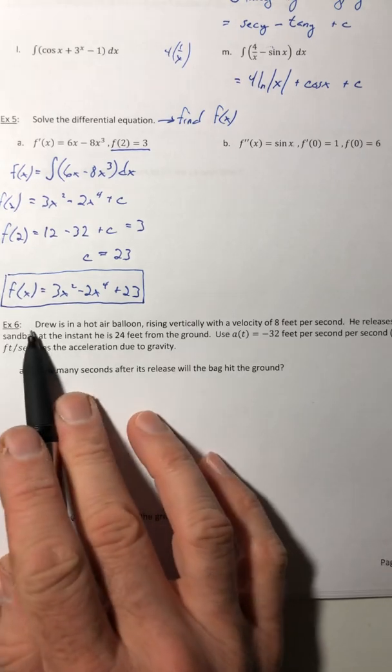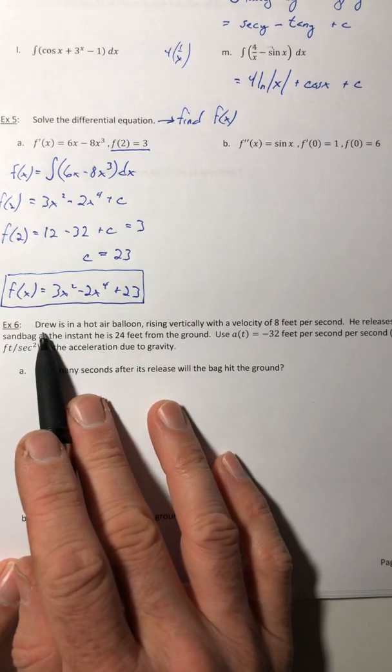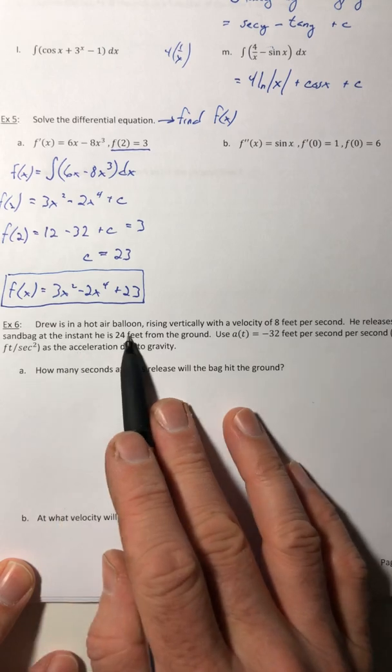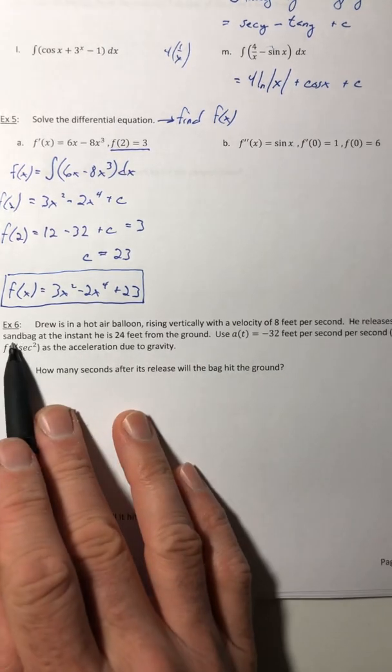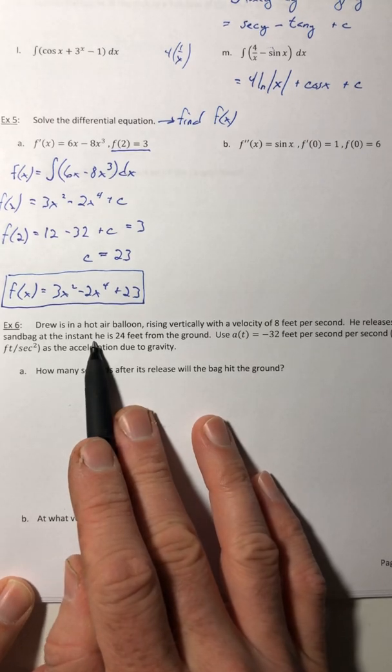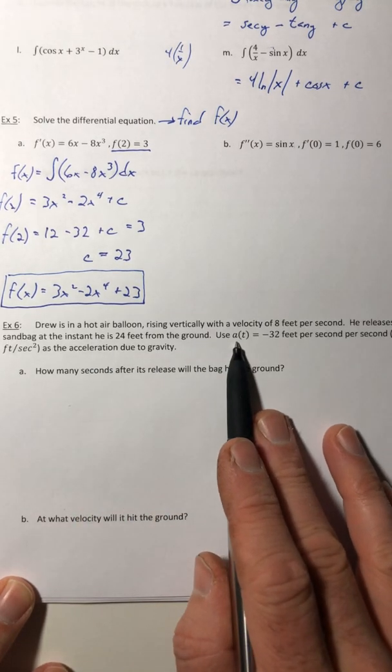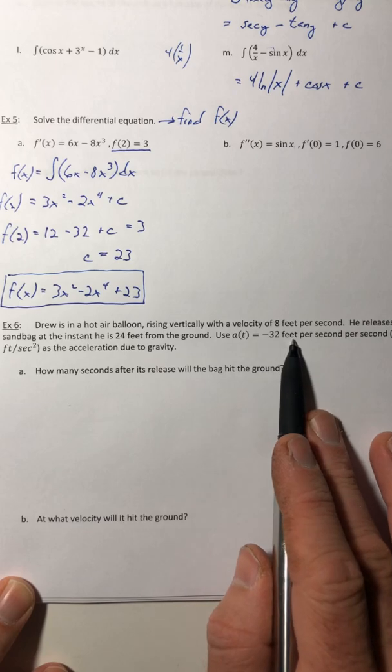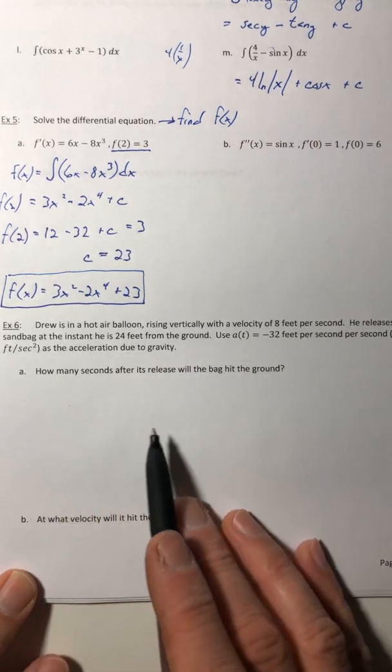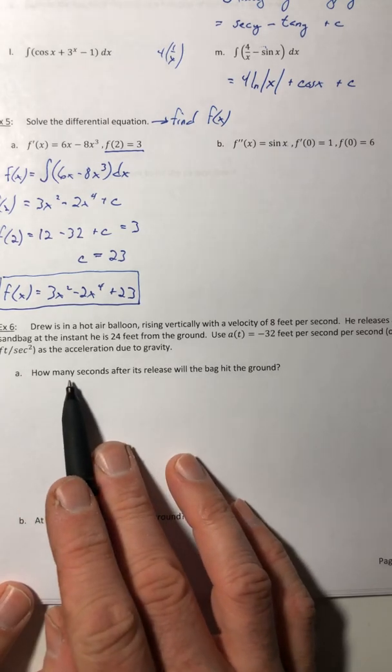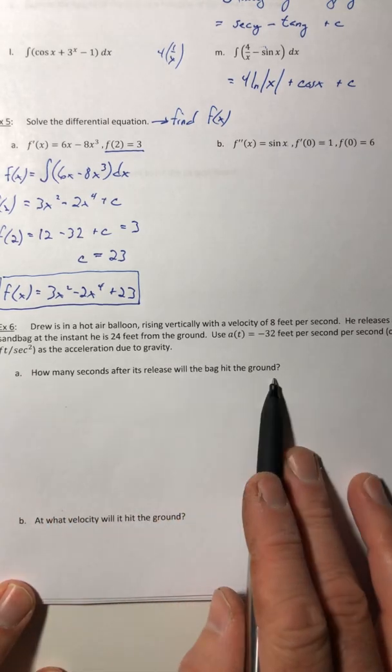Okay, so let's try everybody's favorite problem, the word problem. So Drew is in a hot air balloon rising vertically with a velocity of 8 feet per second. He releases a sandbag at the instant he is 24 feet from the ground. I use a of t equals negative 32 feet per second. So that's his acceleration as acceleration due to gravity. So how many seconds after this release will the bag hit the ground?